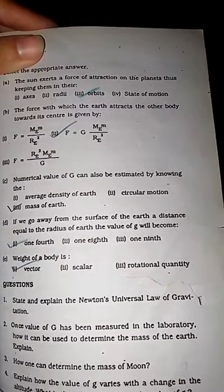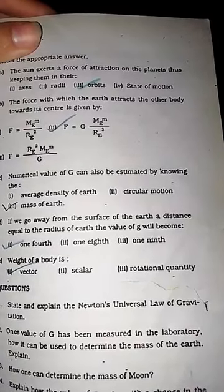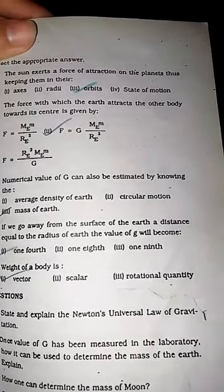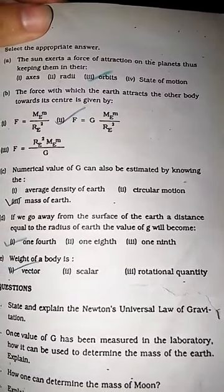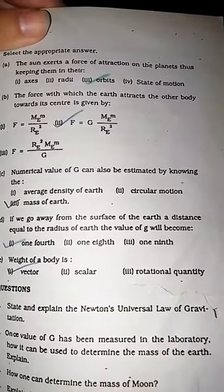We use this equation: g dash upon g equals RE upon RE plus h, whole squared. If we substitute one upon four for g, then h becomes equal to RE. So the distance equals the radius of earth.